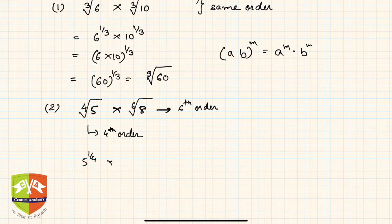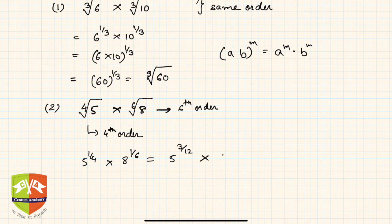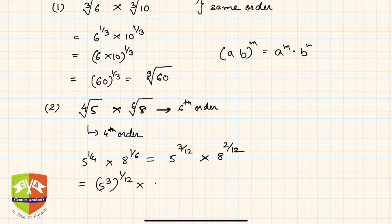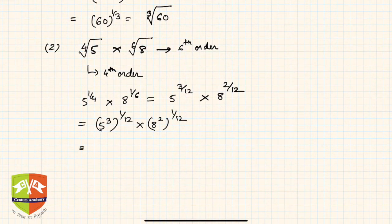Five to the power one-by-four is converted to five to the power three-by-twelve, and eight to the power one-by-six is converted to eight to the power two-by-twelve. So we get five-cubed to the power one-by-twelve, multiplied by eight-squared to the power one-by-twelve. Now one-by-twelve is common, so we can apply the same rule as before.